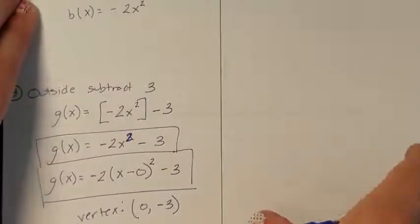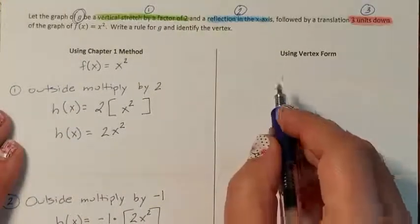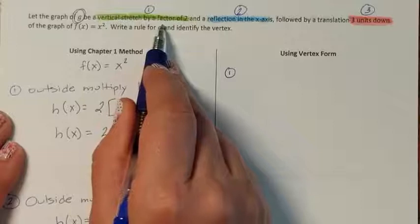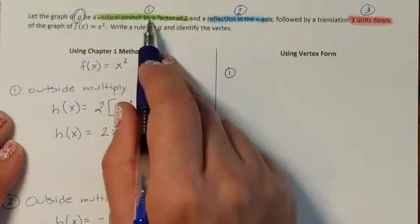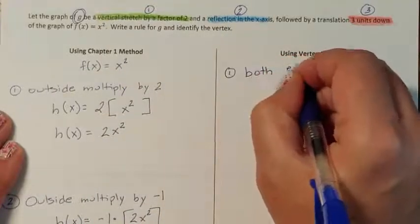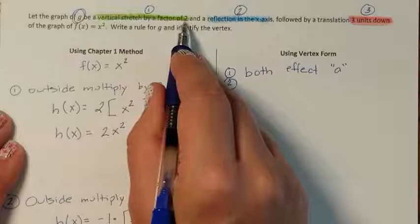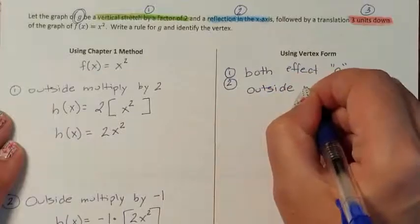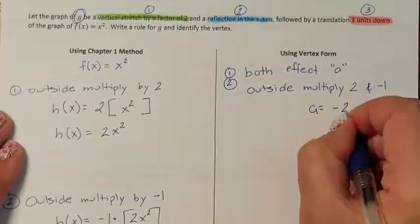Now let's solve this problem using Chapter 2 skills. The first thing it wants is a vertical stretch, which is an outside multiply move, and also a reflection across the x-axis, also an outside multiply move. Both of these are outside multiply operations, so they both affect a. A vertical stretch by 2 says multiply by 2, and the reflection says multiply by negative 1, so my a is negative 2.